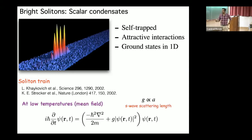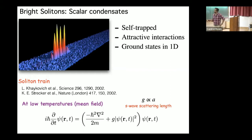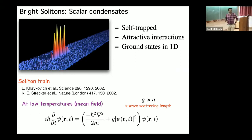The physics of these solitons is described at the mean-field level by the Gross-Pitaevskii equation. The first term is the kinetic energy, and among the most important is the particle interaction term. This coupling constant g is proportional to the s-wave scattering length, arising from low-energy collisions. To get a bright soliton, you need this scattering length a to be negative — that means attractive interaction between the two atoms.